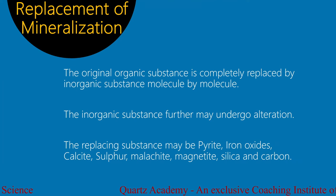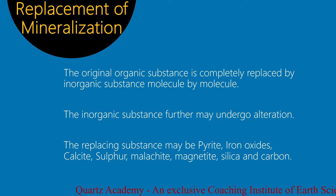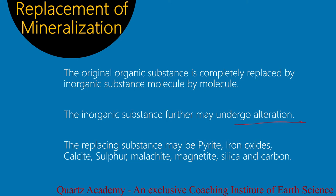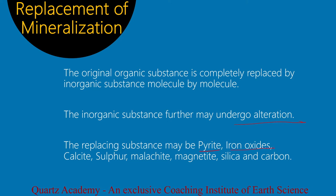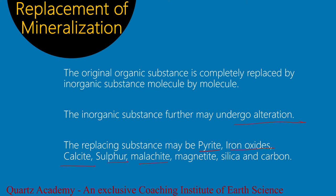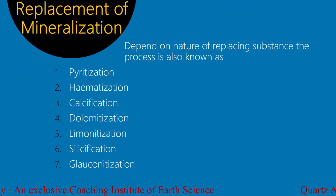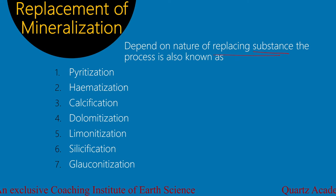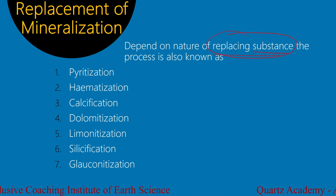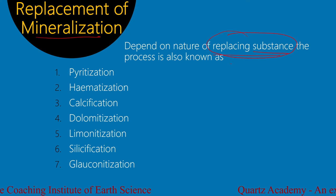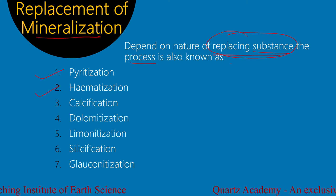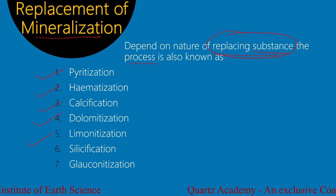Replacement of mineralization: the original organic substance is completely replaced by inorganic substance molecule by molecule. The organic substance may further undergo alteration, and the replacing substance may be Pyrite, Iron Oxide, Calcite, Sulphur, Malachite, Magnetite, Silica, and Carbon. The process is named according to the replacing substance: Pyritization, Hematization, Calcification, Dolomitization, Limonitization, Silicification, and Glauconitization.